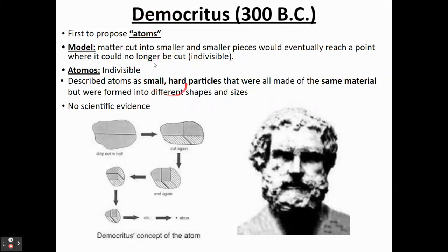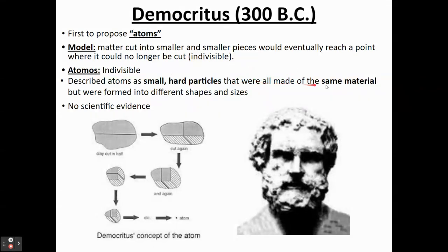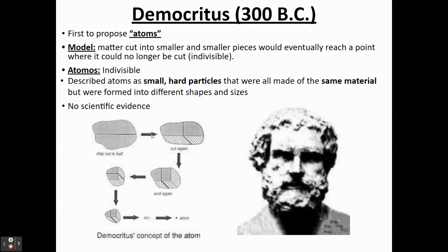Atoms were described as small hard particles made of the same material but formed into different shapes and sizes — so different types of atoms have different shapes and sizes. This wasn't based on scientific evidence; it was just a philosophical thought without any observations to support it, which is a limitation.